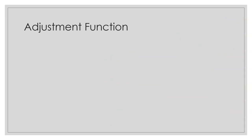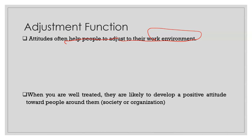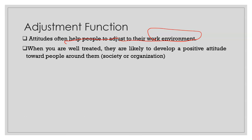Let's talk about the first function: the adjustment function. Attitude often helps people adjust to their work environment. Whenever we go to an office or work in an organization, we try to understand the culture, rules, and regulations and adapt ourselves. When you are well treated, you are likely to develop a positive attitude towards people around you — whether in society or in an organization.